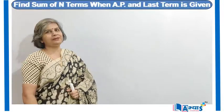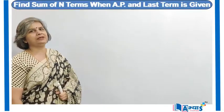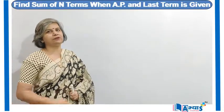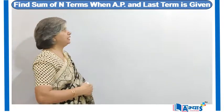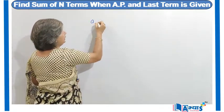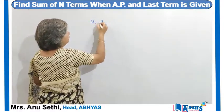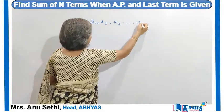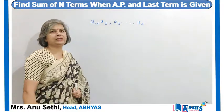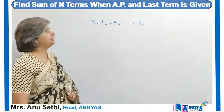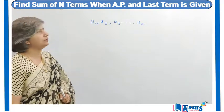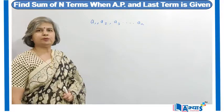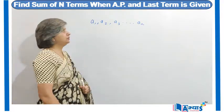Let us discuss the concept of finding the sum of n terms of an AP when the AP is given to us and the last term of the AP is also given to us. That means we have been given the AP A1, A2, A3, and AN — all the terms: first, second, third, and the last term — and we are supposed to find the sum of terms.